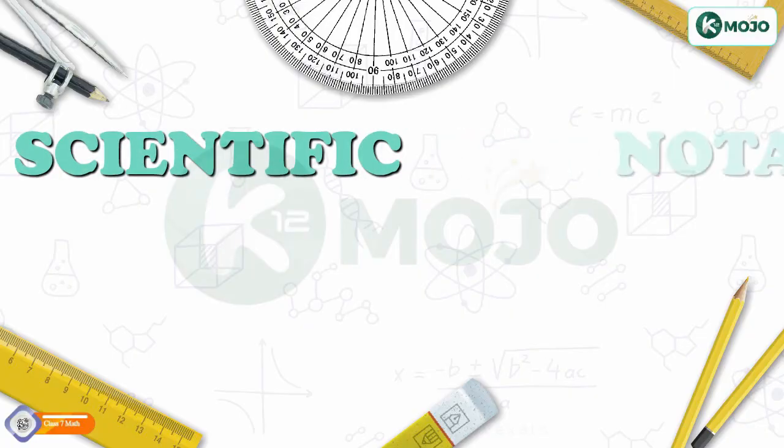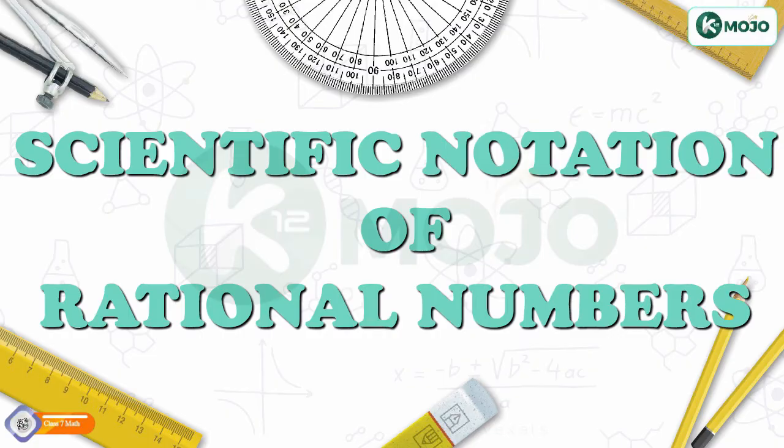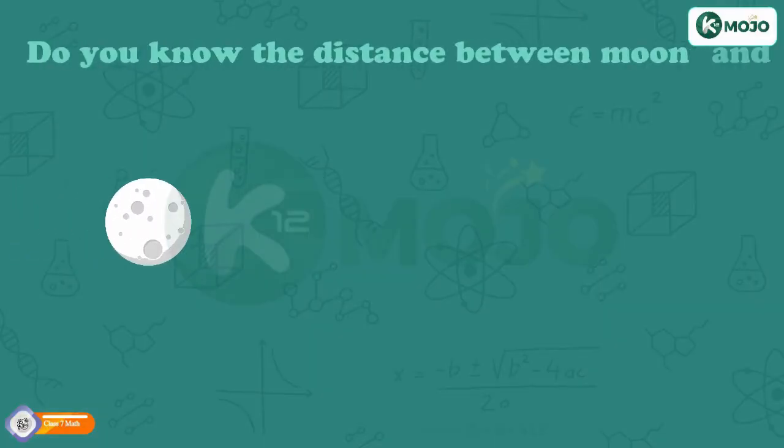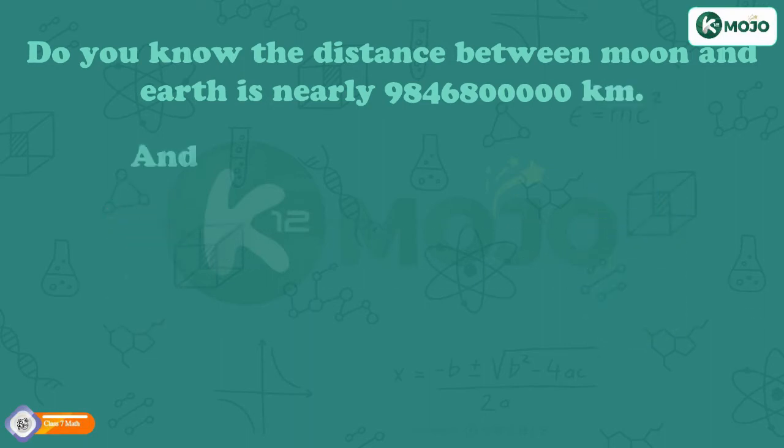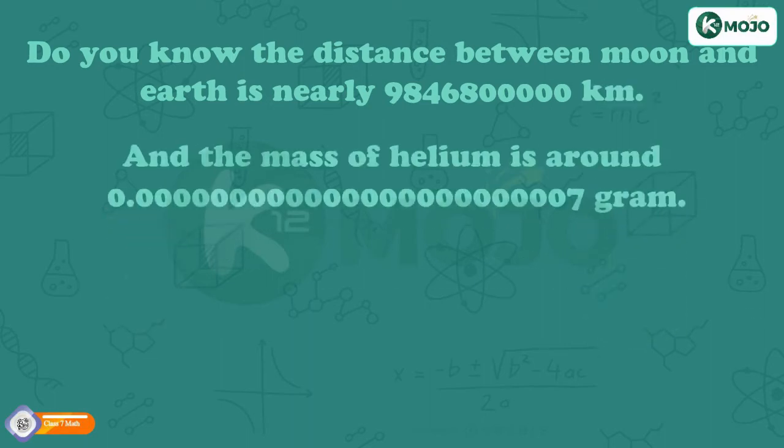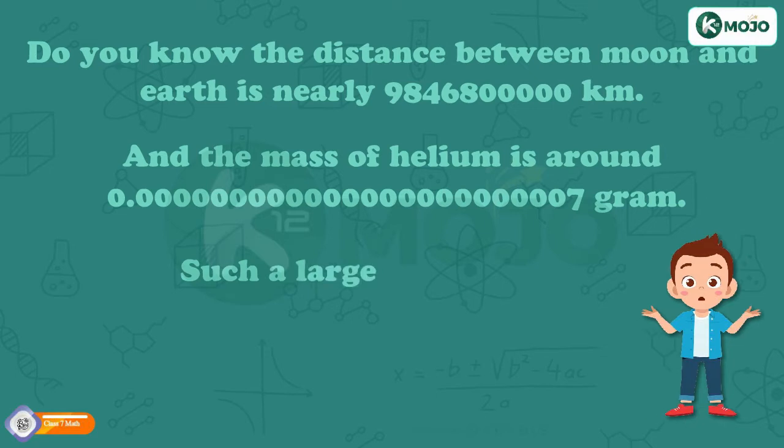Topic: Scientific Notation of Rational Numbers. Do you know the distance between Moon and Earth is nearly 98468000000 km? And the mass of helium is around 0.000000000000000000000007 gram. Such a large number, is it?